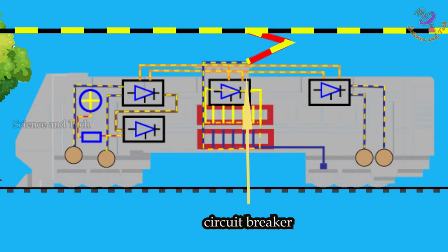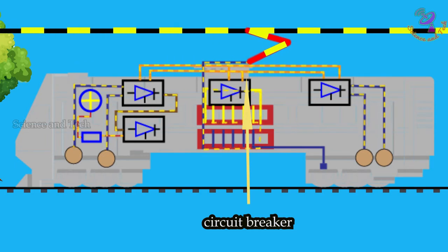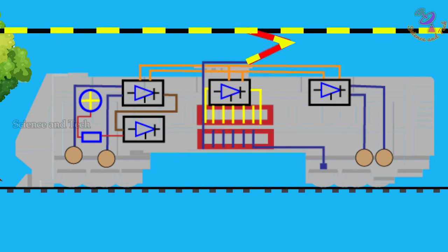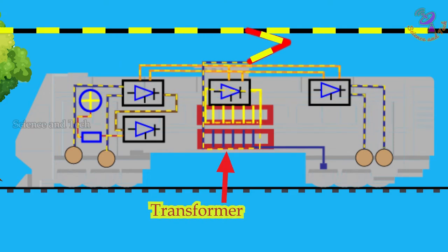The electricity passes through a circuit breaker. The importance of the circuit breaker is to disconnect the electricity supply from the main power line while short circuit, electricity hazard or any maintenance work takes place.